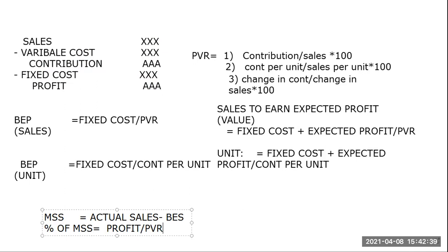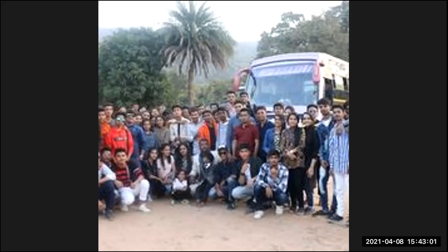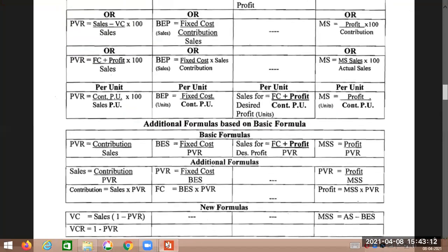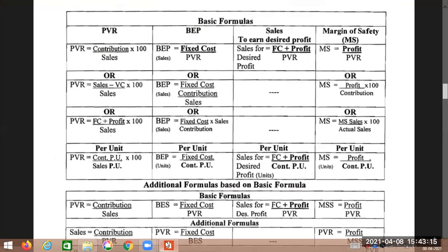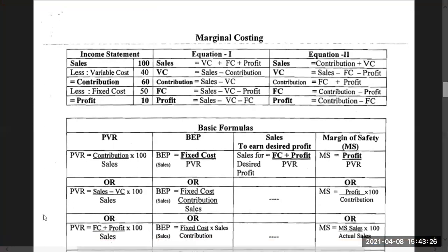The other formulas can be derived from the income statement. If you study the income statement carefully, it covers all formulas. With this we complete all the topics of Unit 2. The formulas covered are: PV ratio with its different variations, break-even point, and margin of safety — all derived from the income statement: sales minus variable cost gives contribution, minus fixed cost gives profit. Okay, thank you.